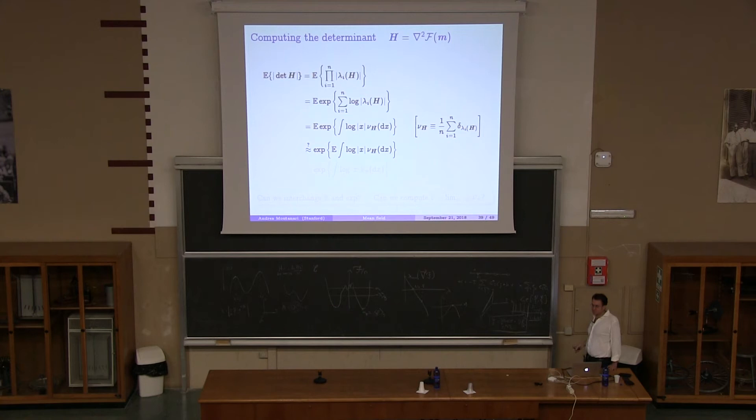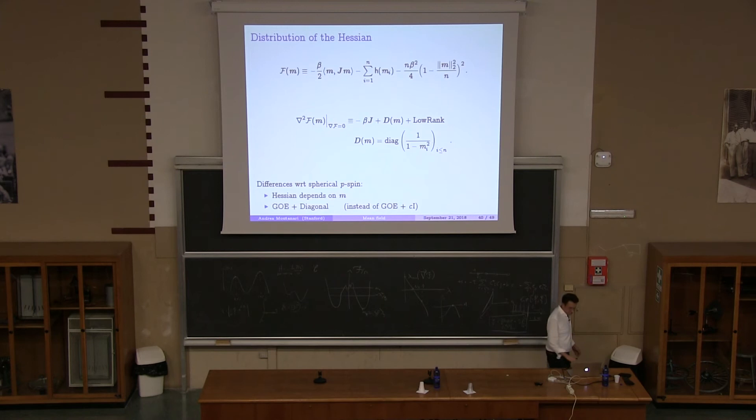This is the sum of the log of the eigenvalues. And this, you can write it as the integral over the spectral distribution of log of absolute value of x. And until here, I didn't do anything. Now, I do something that you teach your incoming PhD student you should never do, right? Push the expectation inside. You should teach everybody this is wrong stuff to do. You do a big mistake, et cetera. And once you do this, well, you compute the expected distribution and you get the formula. And of course, the question is, can you exchange expectation and the exponential? And can you compute this spectral distribution?